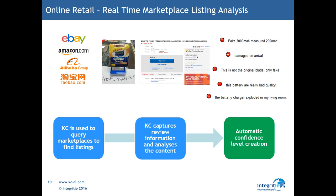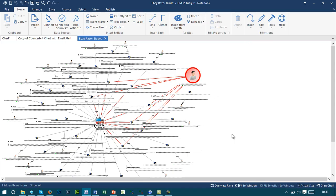This will capture information such as pricing data, who the seller is, the location where these products are being sold, and also the review information. Once you've captured this content, we're able to feed this into various systems, one of these being the seamlessly integrated IBM i2 platform, where we're able to chart large quantities of data and pick out networks and individuals regarding this content.